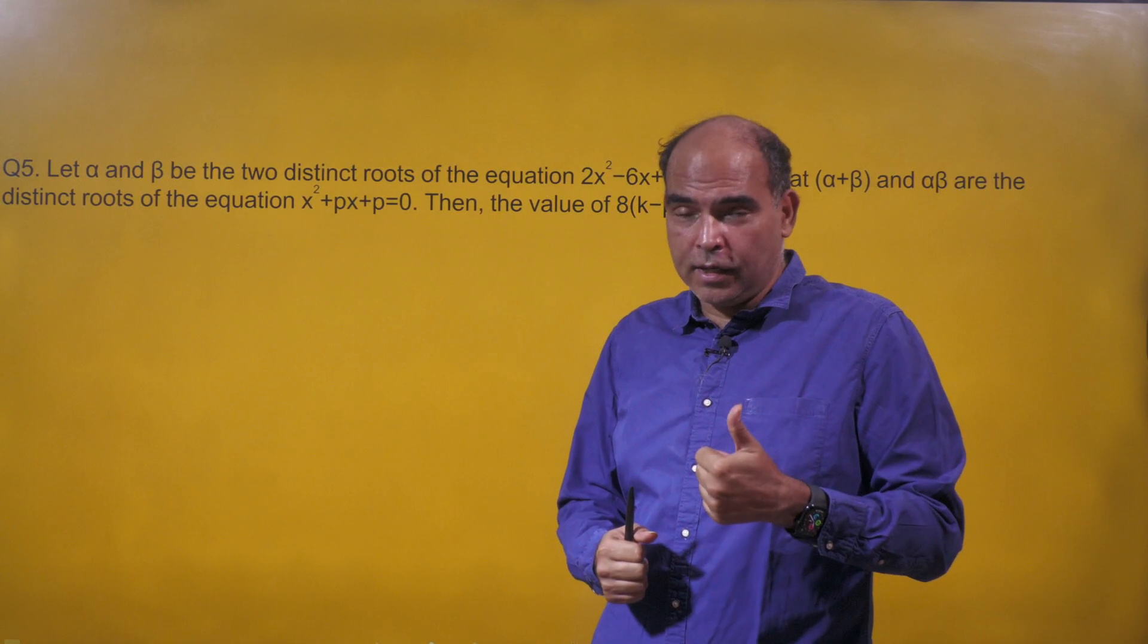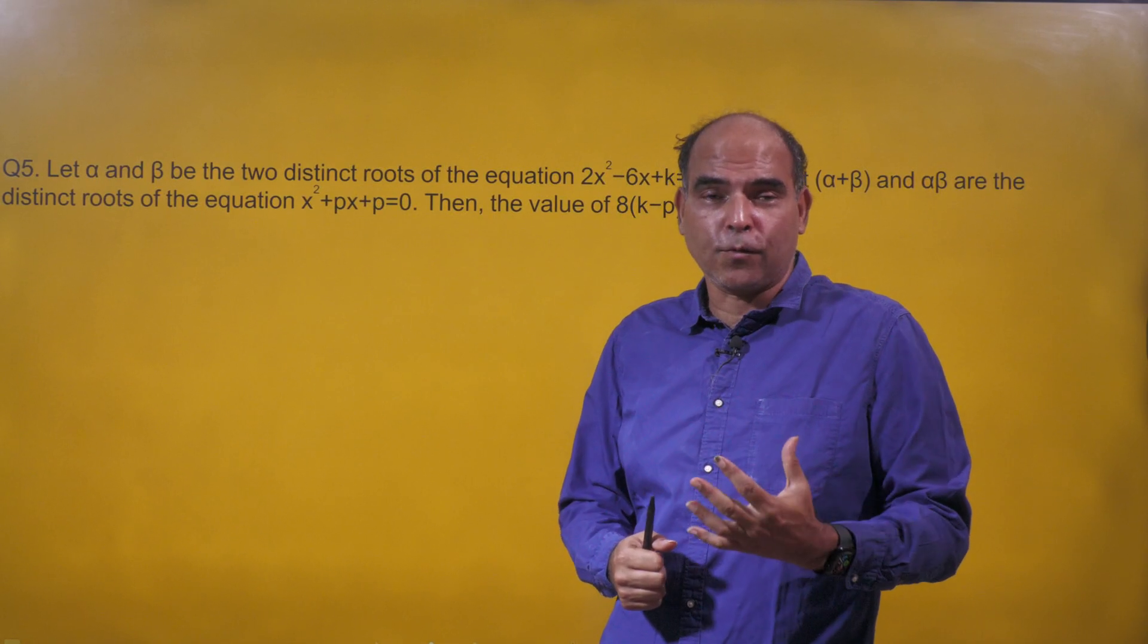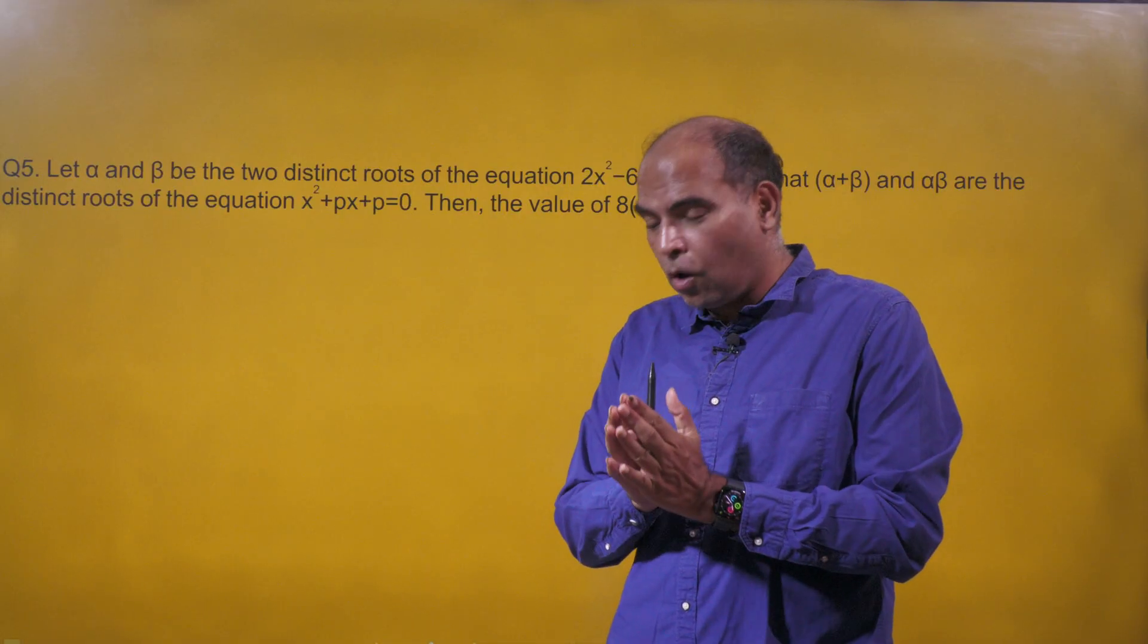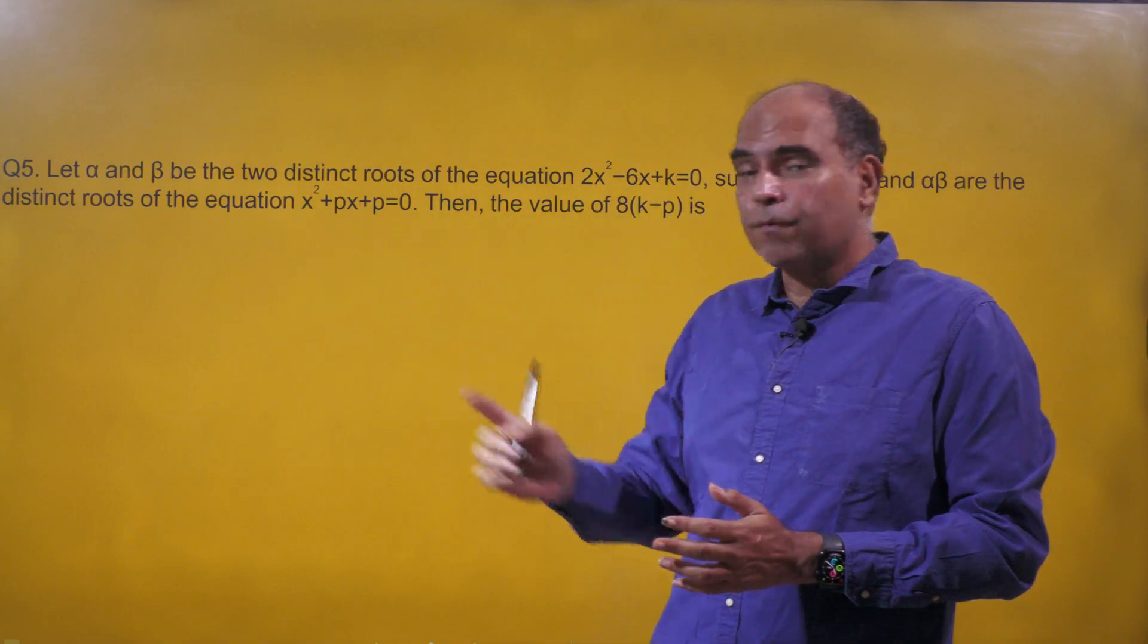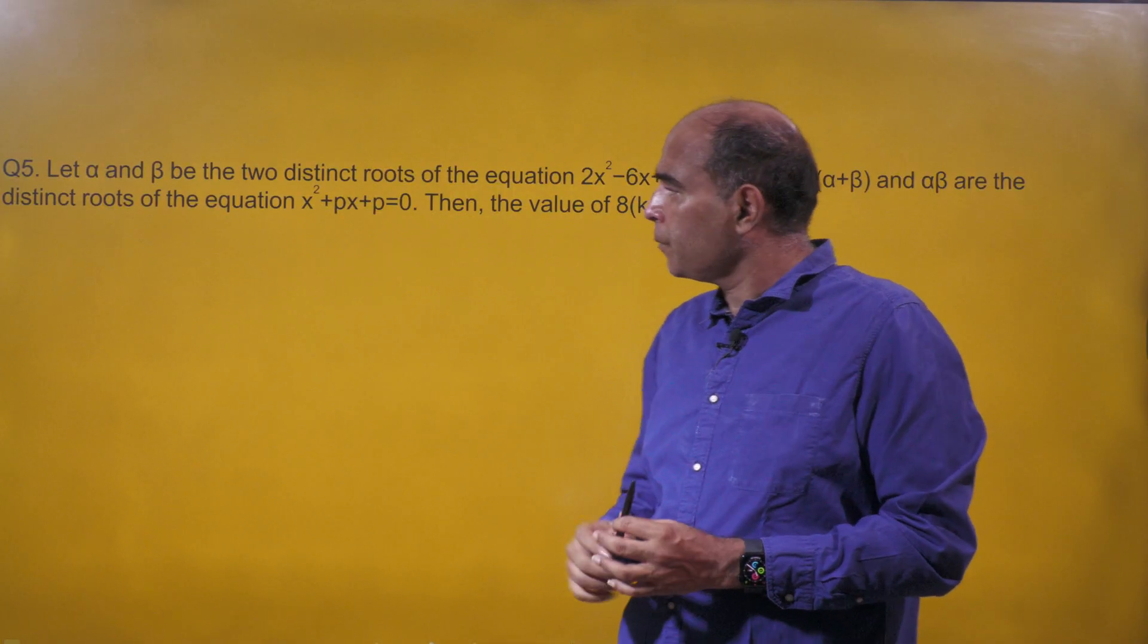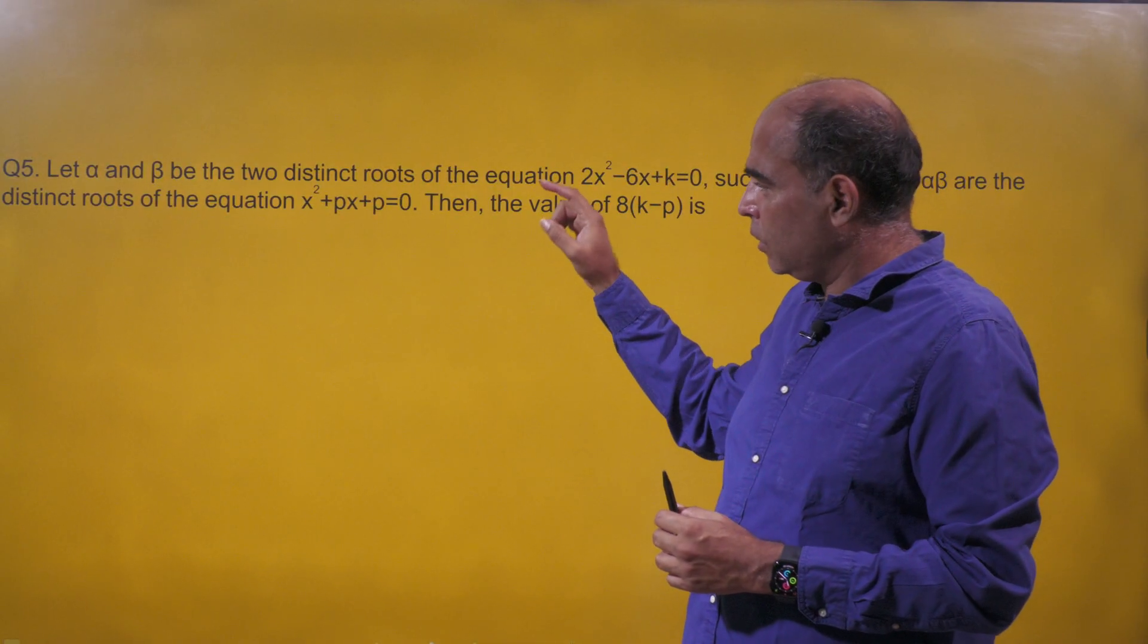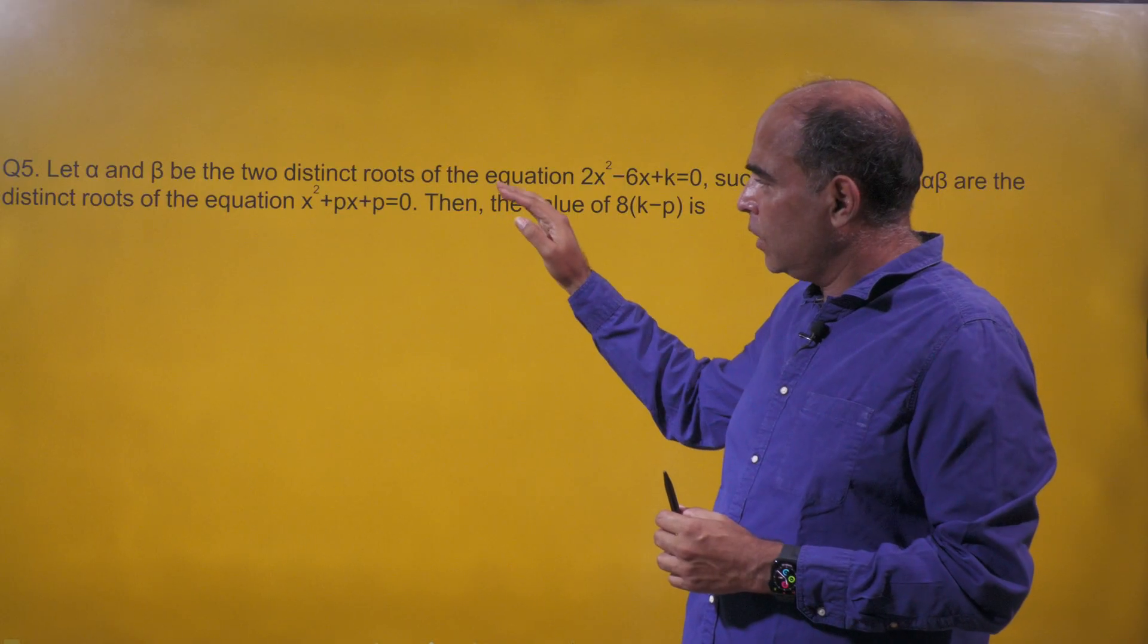Hey guys, continuing my series on 60-second solutions for CAT questions - toughest CAT questions solved through the smallest and simplest reactions. This is a question from CAT 2023 slot 1, an algebra question based on quadratic equations.